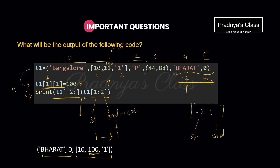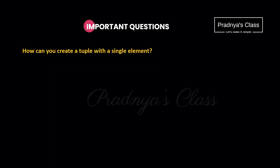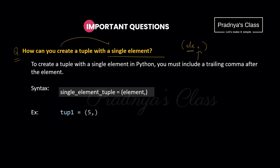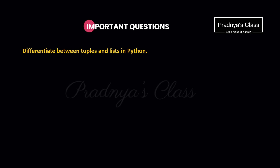If you are clear with the basic concepts, you can solve any questions on tuple. Now here is a theory question: how can you create a tuple with a single element? Don't forget to add a trailing comma after the element. Write the syntax and give one example — for instance, t = (5,).